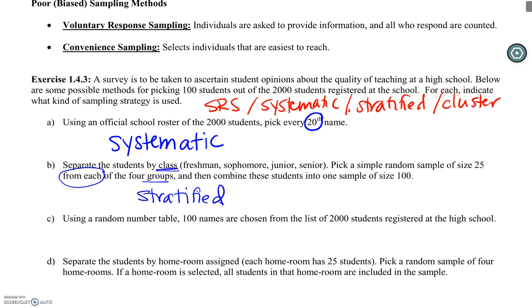C, we're just using a random number table to choose 100 names. There's absolutely nothing exciting happening here. This is our good friend, the simple random sample.